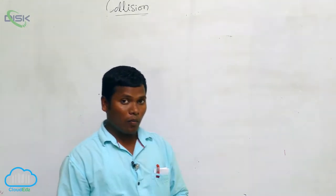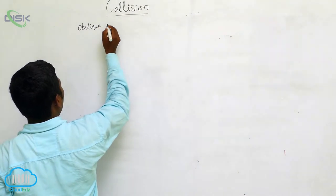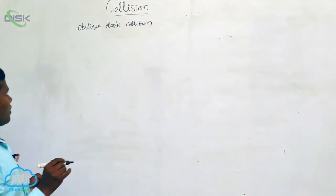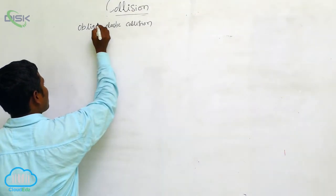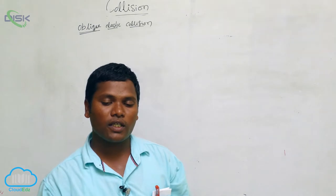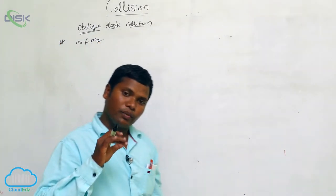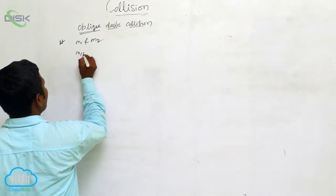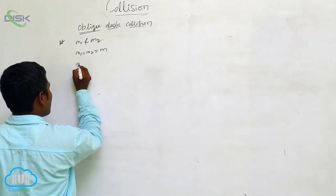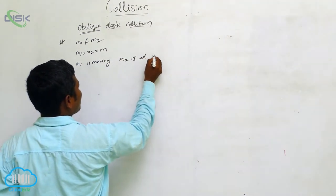Oblique Elastic Collision. So what is the Oblique Elastic Collision? In an oblique collision, we consider two masses: M1 and M2. Here the masses should be equal, so we take M1 equal to M2 equal to M. We consider M1 is moving and M2 is at rest.